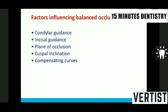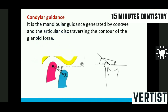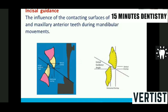There are five factors which influence balanced occlusion: condylar guidance, incisal guidance, plane of occlusion, cuspal inclinations, and compensating curves. Condylar guidance is the guidance by which the condyle travels along the wall of the glenoid fossa; the angle it creates is called condylar guidance and is not under the control of the dentist. Incisal guidance is the influence of the contacting surfaces of maxillary and mandibular teeth during mandibular movements. Important parameters here are overjet — the horizontal overlap between lower and upper central incisors — and overbite — the vertical overlap between incisor tips.